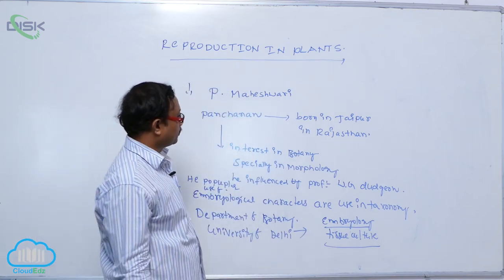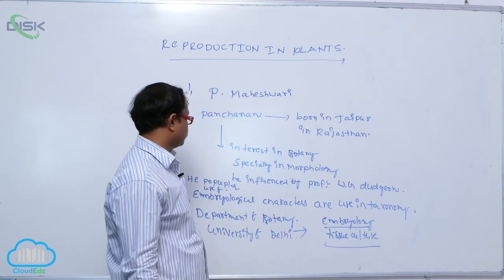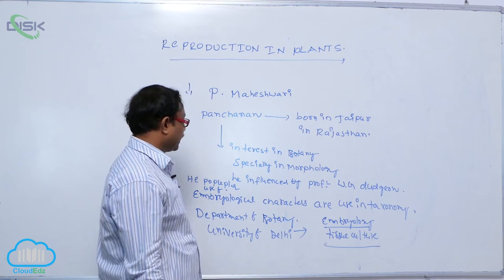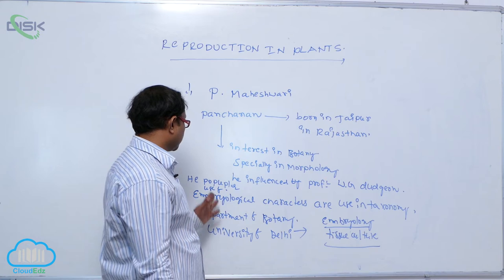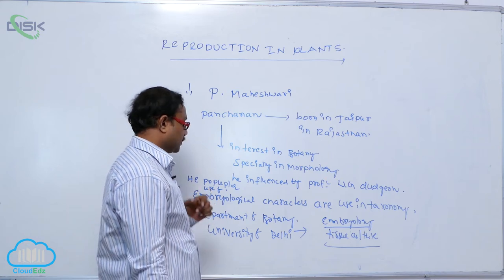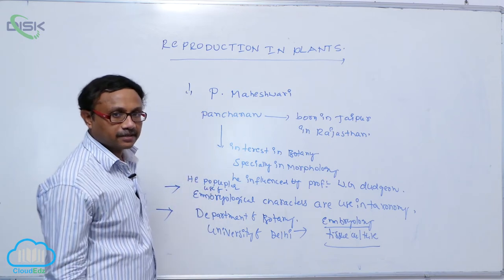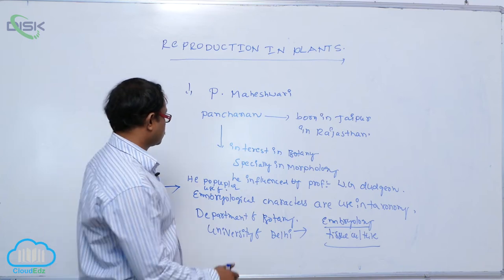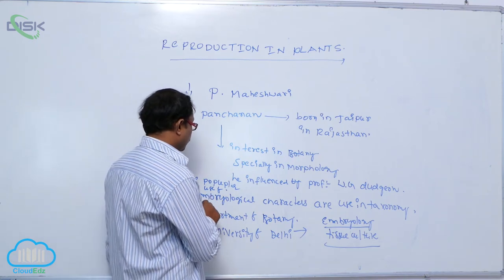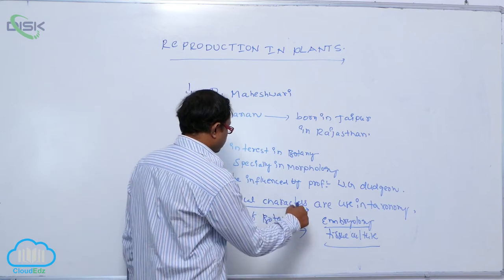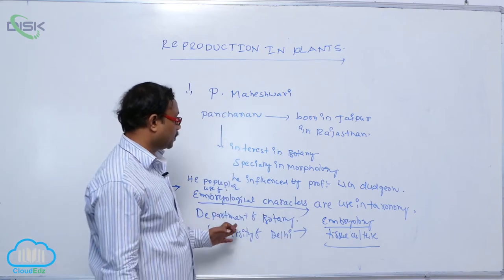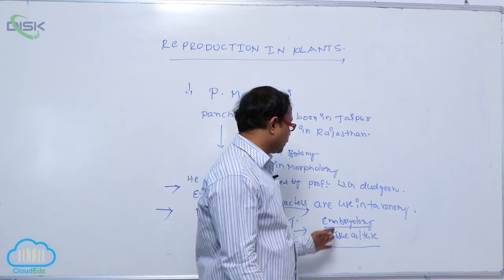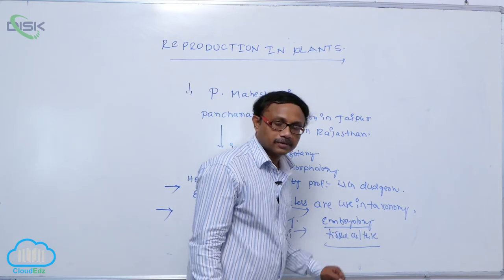Panchanan Maheshwari was born in Jaipur, Rajasthan, with interest in botany, especially in morphology. For the first time, he used embryological characters for taxonomical purposes — for identification, nomenclature, and classification. He popularized the use of embryological characters and established the Department of Botany at the University of Delhi, also developing embryology and tissue culture.